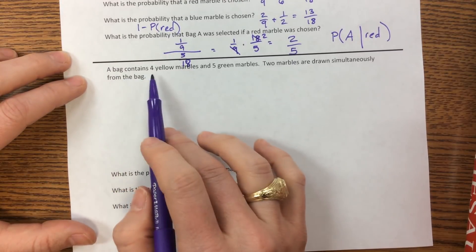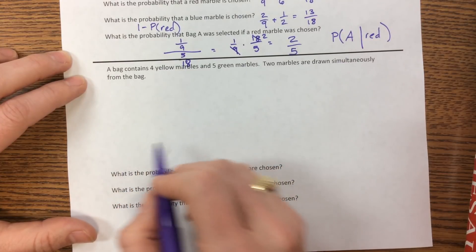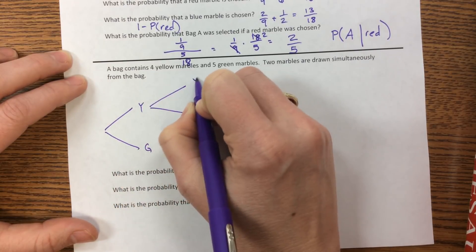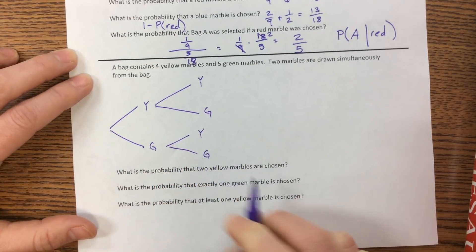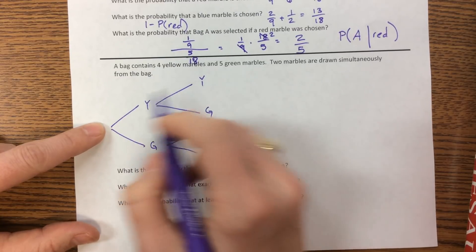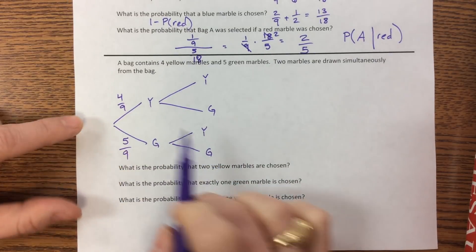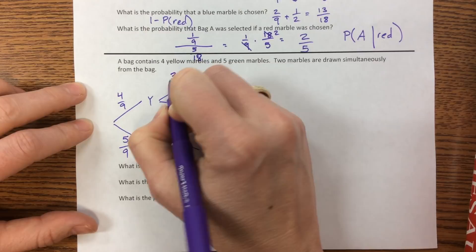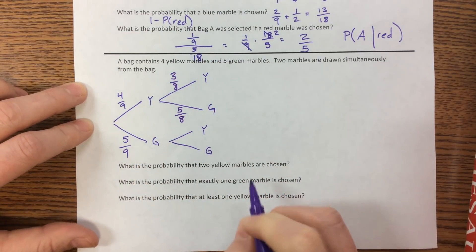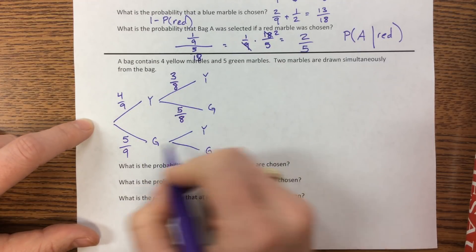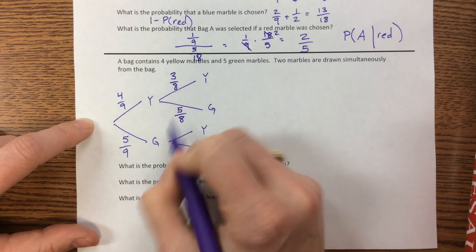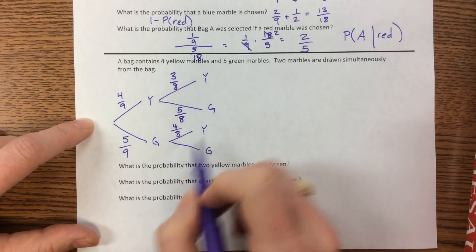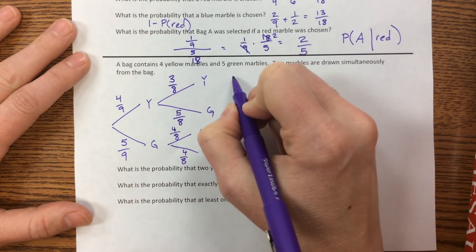The next problem: a bag contains four yellow and five green marbles, and two marbles are drawn simultaneously. It's helpful to think of this as sequential draws. The probability of getting yellow first is four out of nine, and green first is five out of nine. Going down the yellow branch, we've removed one yellow, so we now have three yellows and five greens out of eight remaining. Going down the green branch, we've removed one green, leaving four yellows and four greens out of eight remaining.